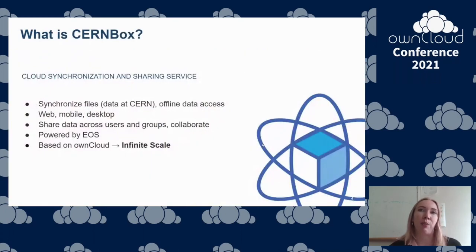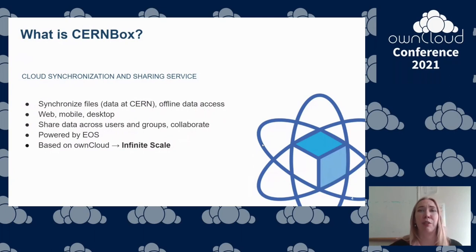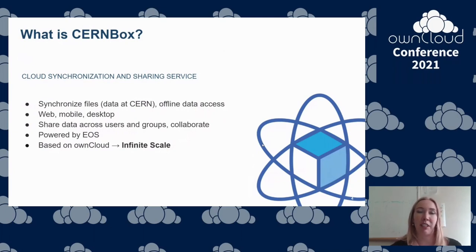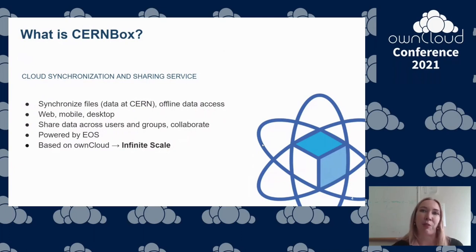What is CERNBox and how can it help? CERNBox is a cloud synchronization solution available for all CERN users. We allow them to synchronize resources across major platforms and provide an easy way for sharing data and collaborative work with different scientific integrations. CERNBox is powered by EOS, a storage backend developed by CERN, and it's based on ownCloud. We are also in the process of switching to the newest version, Infinite Scale.